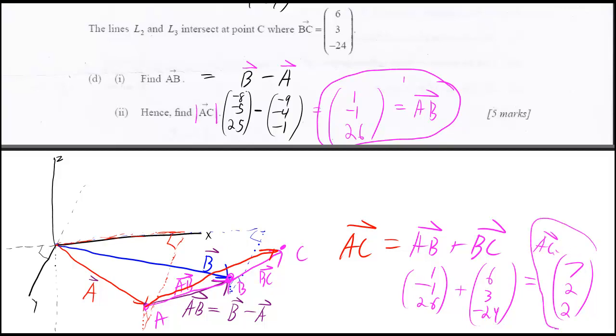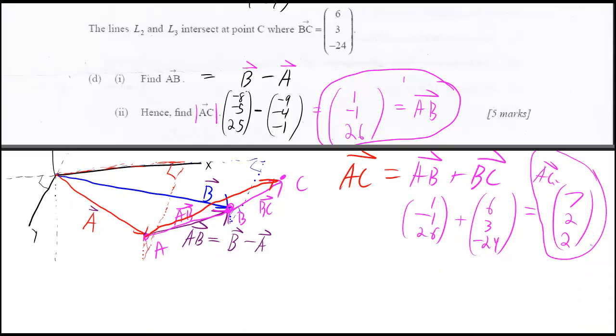So if that's AC, how do we find the magnitude of AC? Because that's what they want. We don't need to circle this, but we need to find the magnitude. That's the square root of 7 squared plus 2 squared plus 2 squared, which equals 49 plus 4 plus 4, which is 49 plus 8, which is 57. So the square root of 57.